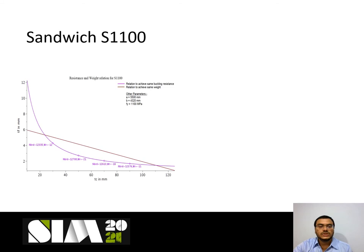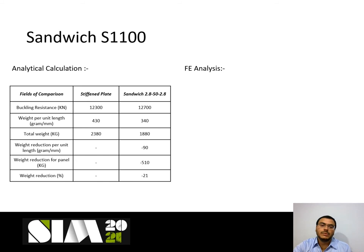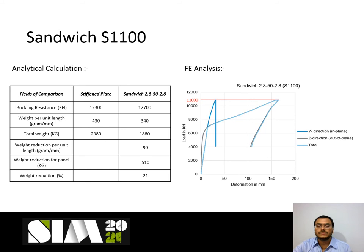For the sandwich panel with S1100 steel, the same procedure is followed. Choosing the farthest point from the weight relation line on the buckling relation line gives the corresponding sandwich panel. From the resulting table, the sandwich panel with S1100 steel face plates results in 21 percent weight reduction. Non-linear analysis is also done to confirm the load-carrying capacity.